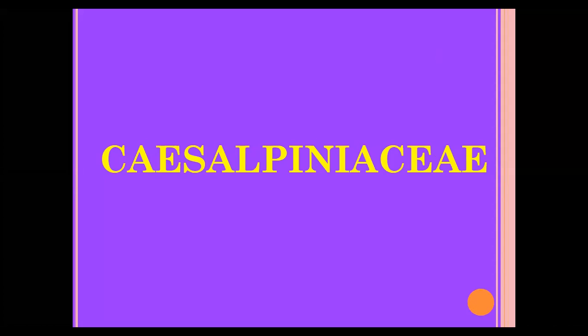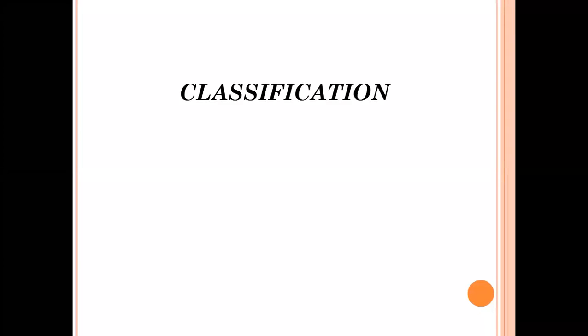The Caesalpinaceae family, also called the Cassia family. Now let's discuss the systematic position of Caesalpinaceae — the first classification or systematic position of this family.